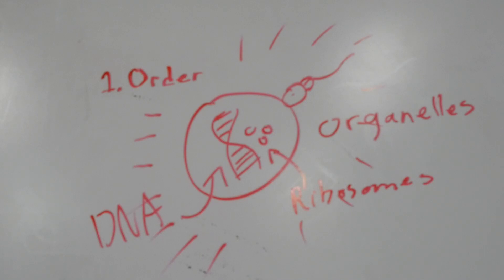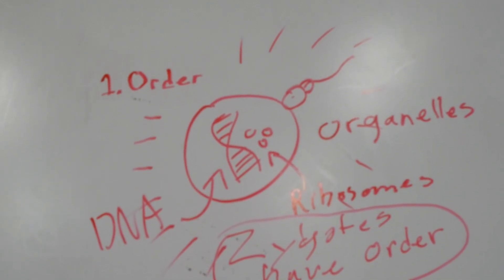This is also only one of several complex cellular processes necessary to the survival of the cell. Order, the sort that would fulfill the first property of life, is needed to make sure all these processes happen when they're supposed to.